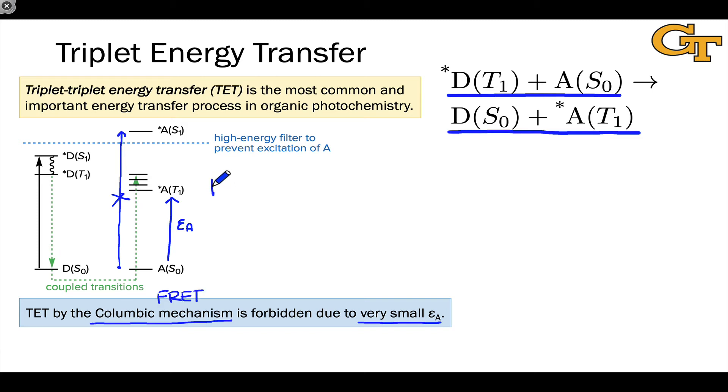As such, TET must occur via the Dexter or exchange mechanism. And of course, as we saw earlier in the video on sensitizers, the ideal for the energy donor is that there is a very small energy gap between S1 and T1. In other words, a very small delta EST value.